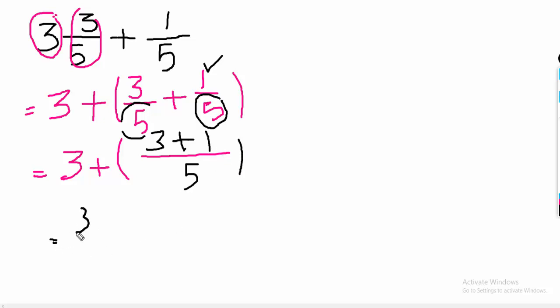3 plus, 3 plus 1, 4 over 5. Now, 3 whole 4 over 5 is the answer. Now, I am going to show you the second method.